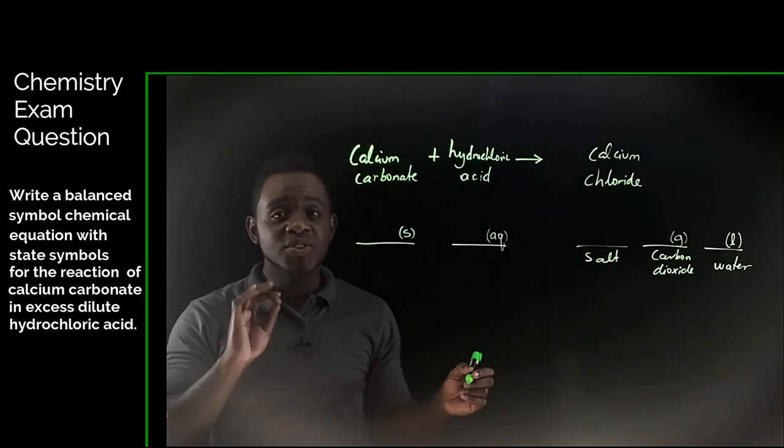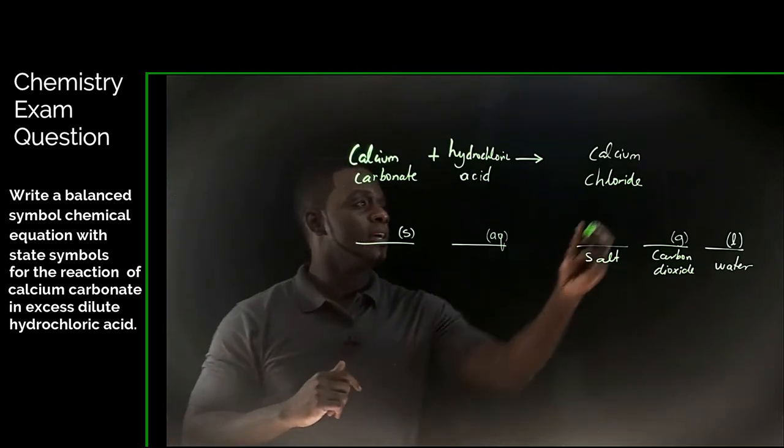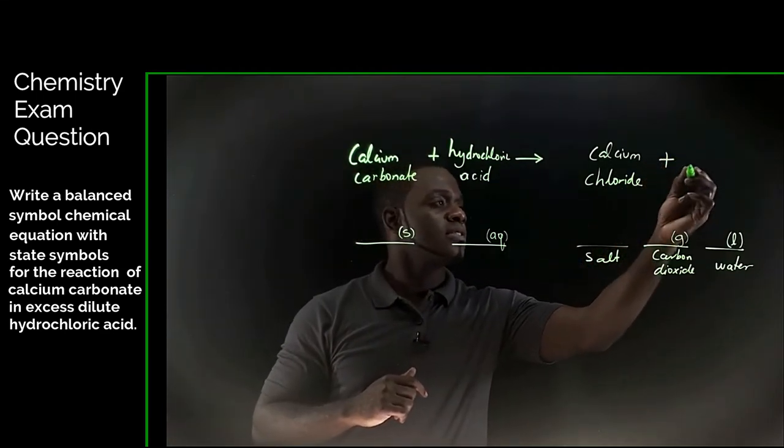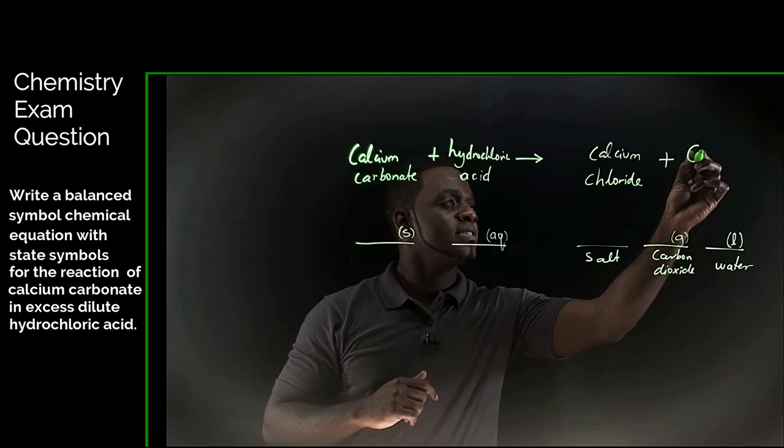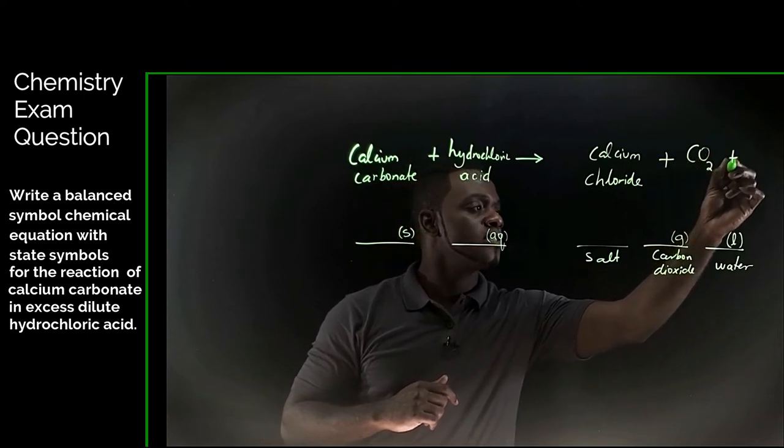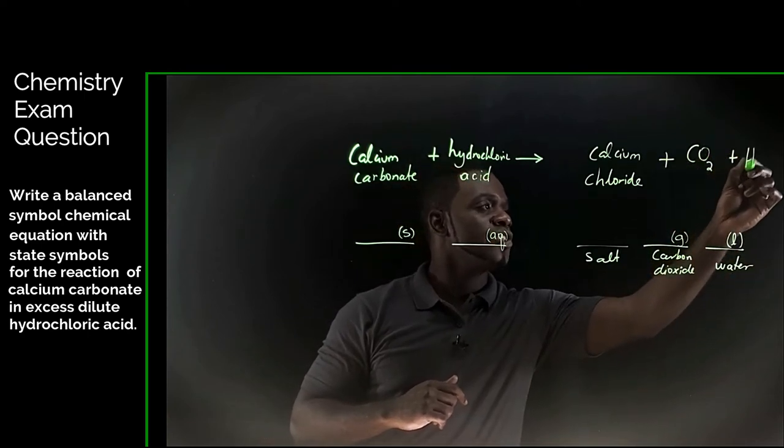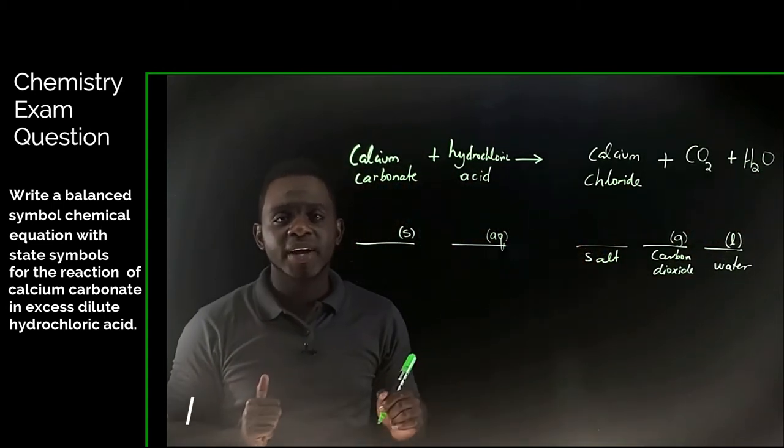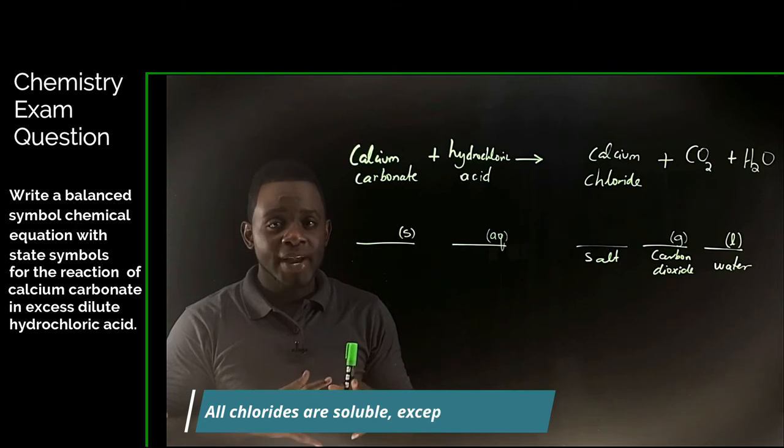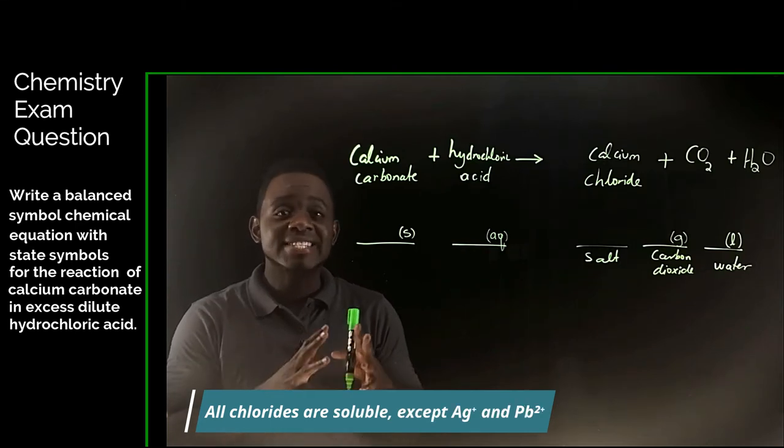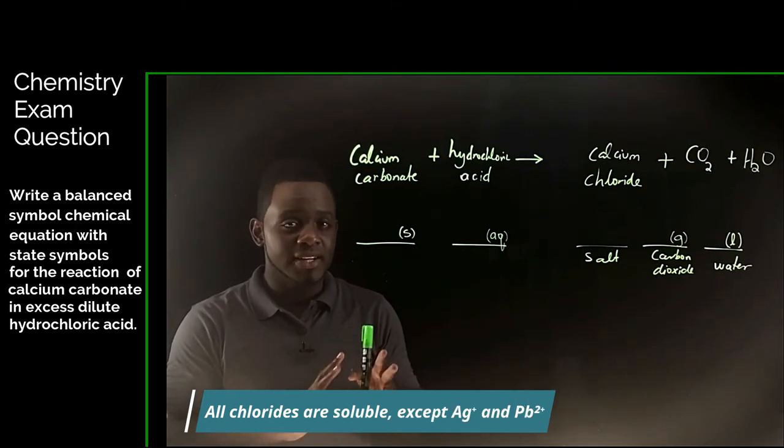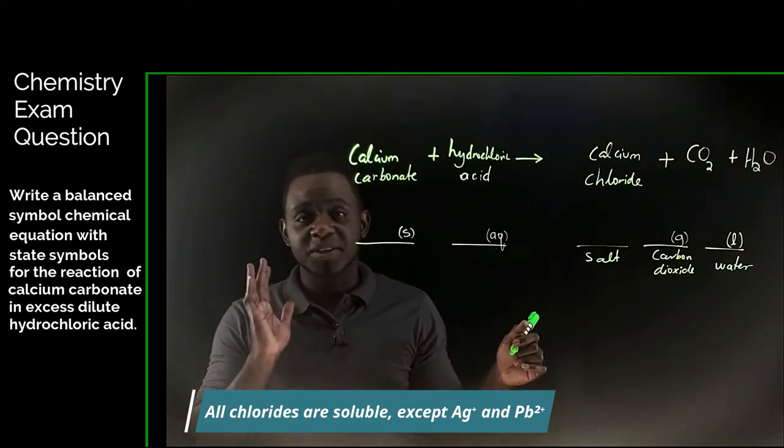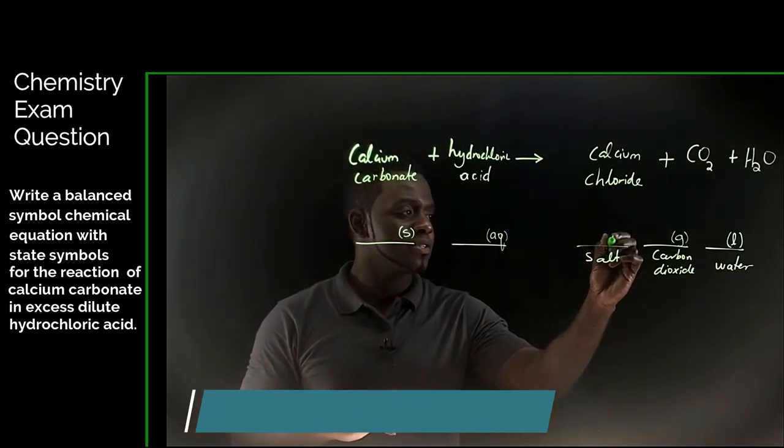So the salt is calcium chloride plus carbon dioxide, CO2, plus water, H2O. And for the solubility of calcium chloride, all chlorides are soluble except silver and lead. Well, calcium is neither silver nor lead. So of course, it is aqueous.